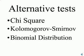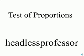Interestingly enough, in this particular case, all of these alternative tests agree with the test of proportions that we should reject the null hypothesis because p is less than 0.001. This has been another Headless Professor video.